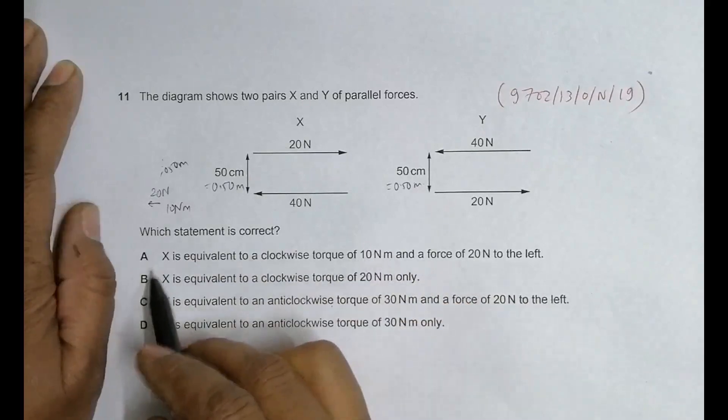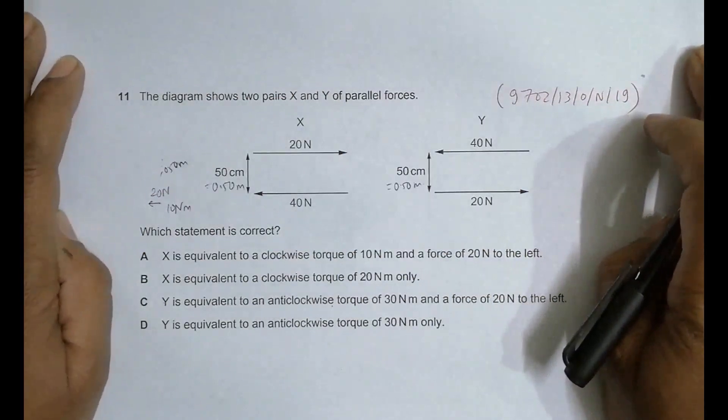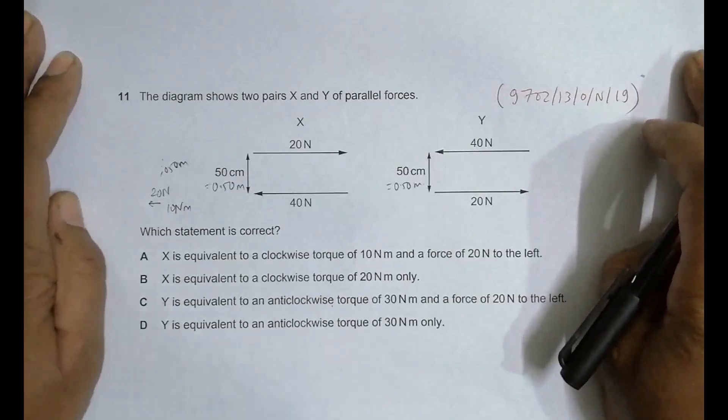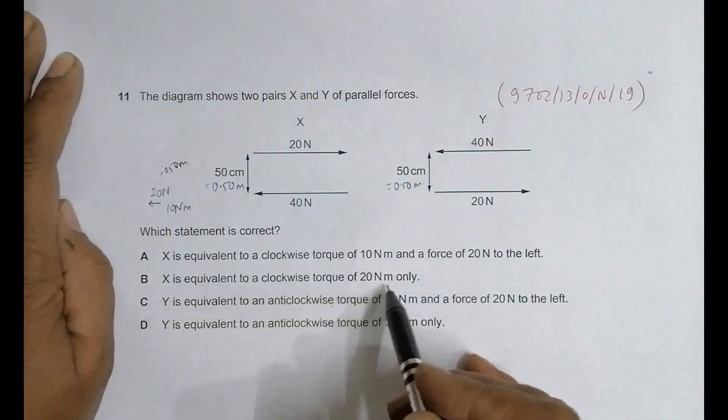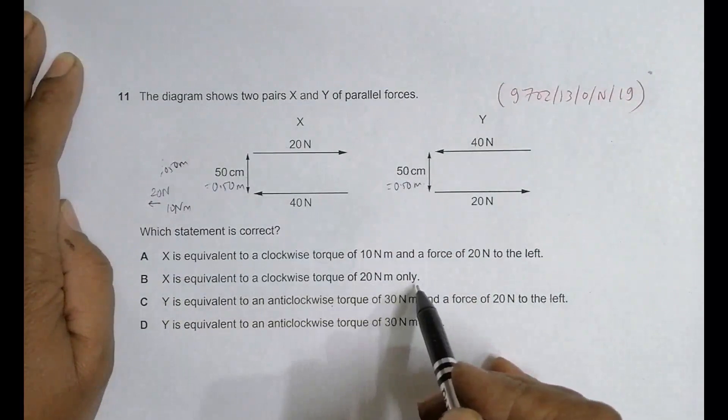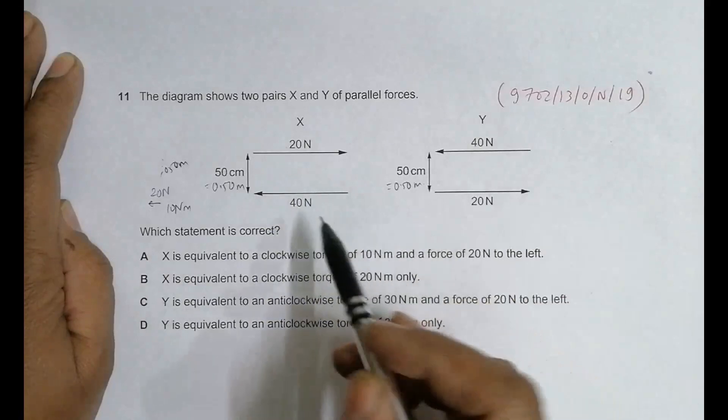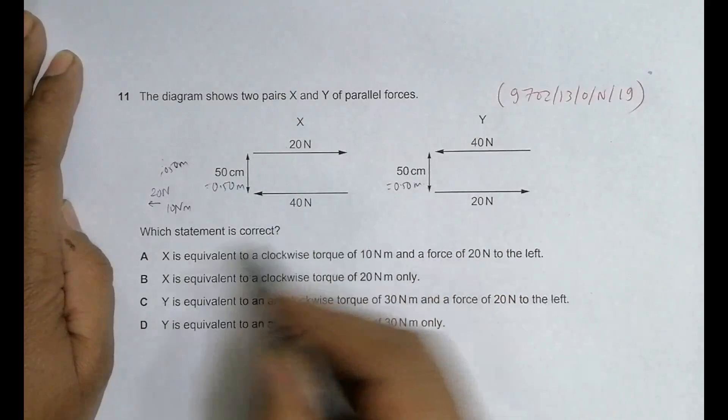Let's check the other options as well, because in A-level we often don't have the correct answer, we only have the best answer. Option B says X is equivalent to a clockwise torque of 20 Newton-meters only. This is not correct because it's also equivalent to some resultant force. When forces are imbalanced they give some resultant force - it doesn't address that, so this is wrong.